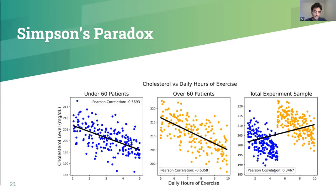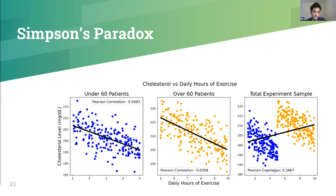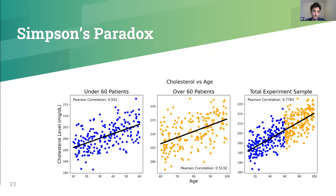However, when we repeat the same analysis taking the whole population sample together, we are faced with a completely contradictory scenario — a positive correlation implying that more exercise leads to an increase in cholesterol levels. This type of scenario is the Simpson Paradox: correlation goes in one direction when considering different subgroups but in the completely opposite direction when considering the whole group. To unveil the reason, we need to go beyond the data and think about how the data was generated — for example, what missing variable might be preventing us from seeing the full picture.